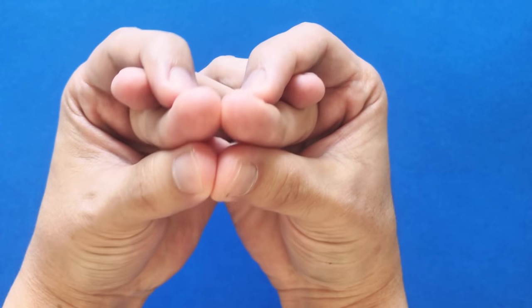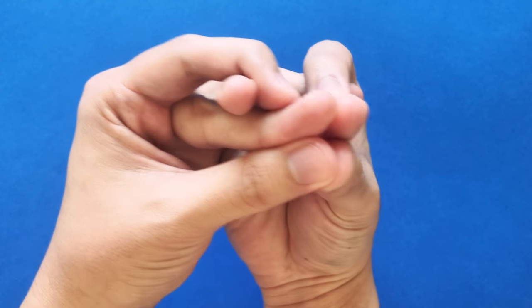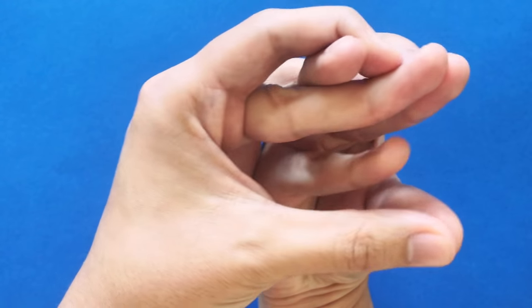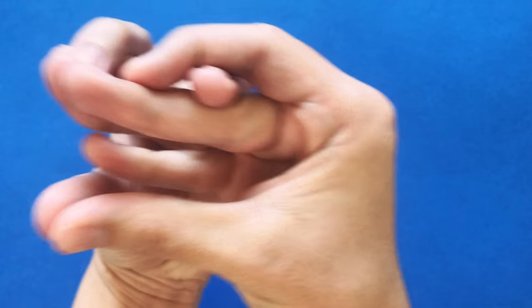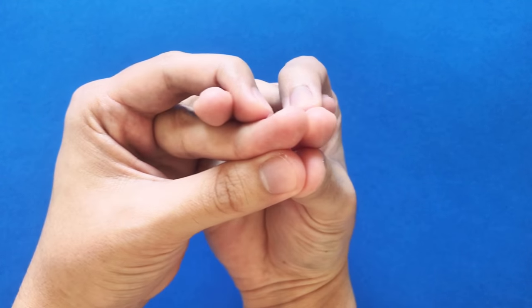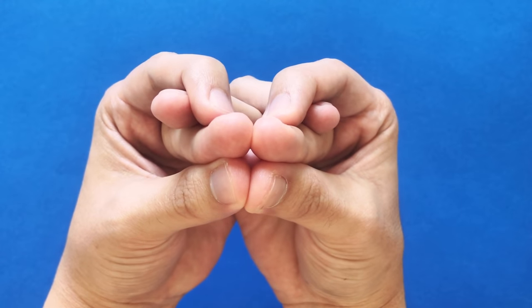Take your pinky, slip it under so that it appears in the mouth of your cobra. So that's how you make a cobra with your own two hands.